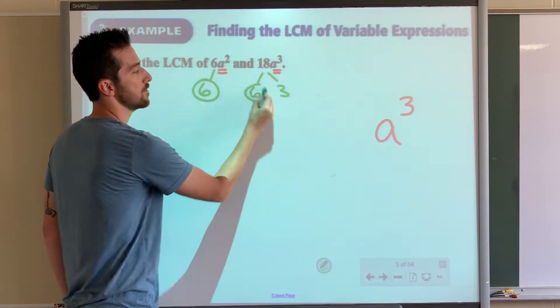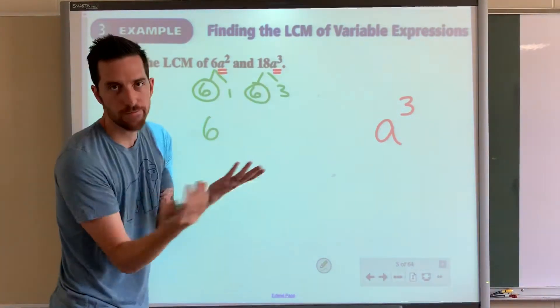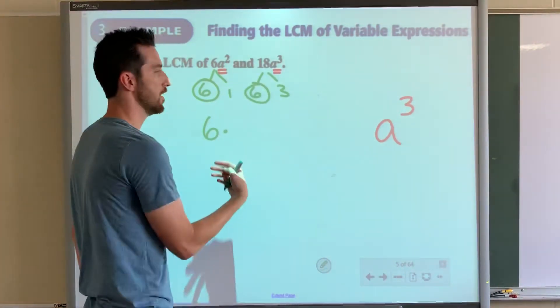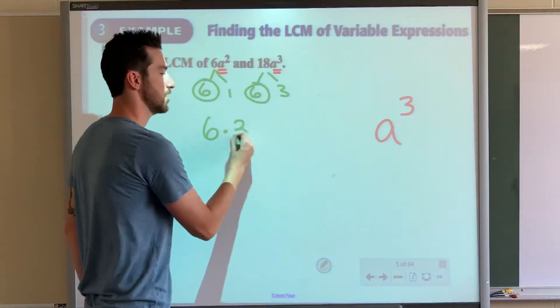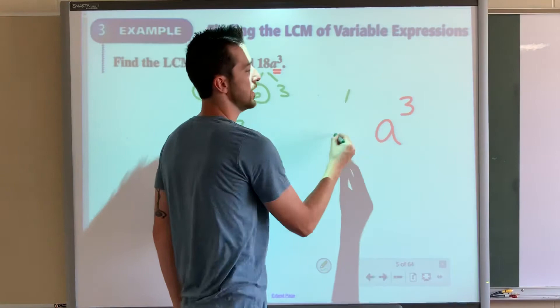They have a 6, so let's bring it down. And then this just has 1 and 3, which they have nothing in common except for 1. So we bring down the 1 and the 3, but really you don't need to bring down the 1. So it's just 6 times 3, which is 18. So we will have 18.